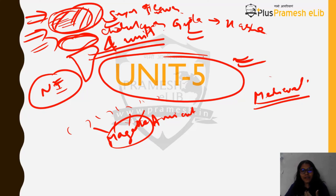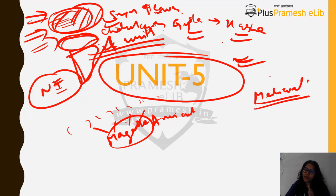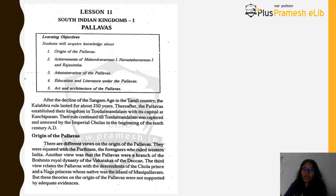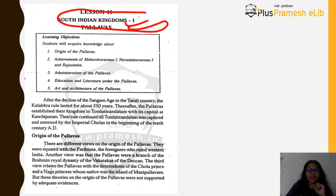We will now proceed with Southern Indian kingdoms because Northern Indian ancient history has reached the Harsha empire or Pushyabhuti dynasty. In the South we are still left with many things — Pallavas, Imperial Cholas, and so on. We will try covering them in greater detail here. We start with the Pallavas, which is South Indian Kingdom 1 — Lesson 11, Unit 5 of Tamil Nadu Class 11.